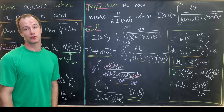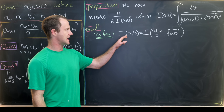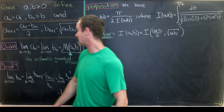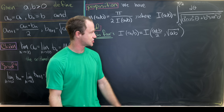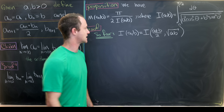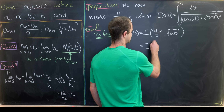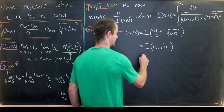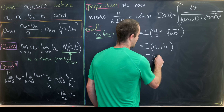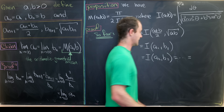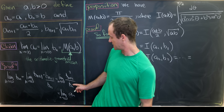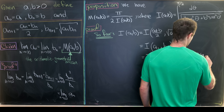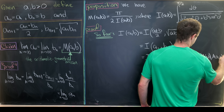We saw that I(a,b) = I((a+b)/2, √(ab)). But (a+b)/2 is exactly a₁ and √(ab) is exactly b₁ from the recursion. So I(a,b) = I(a₁,b₁). Applying the rule again gives I(a₂,b₂), and so on. Taking the limit, since both sequences converge to the arithmetic-geometric mean M = M(a,b), we get I(a,b) = I(M, M).